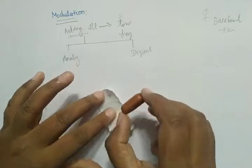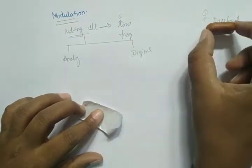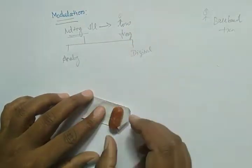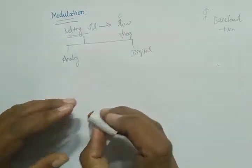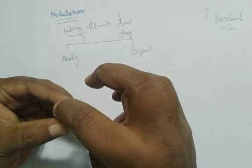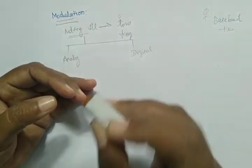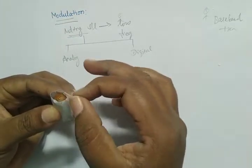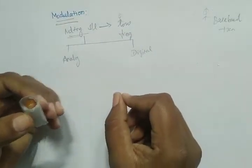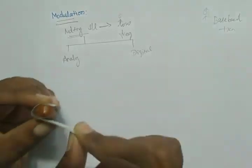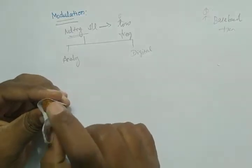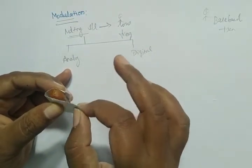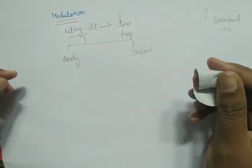Modulation is defined as the process by which some properties or parameters of the carrier signal are varied in accordance with the instantaneous value of the message signal. So according to the message signal, we change the carrier. We should vary only the properties or parameters of the carrier signal — not the original signal — because if we vary the original signal, the receiver will not receive the original information correctly.